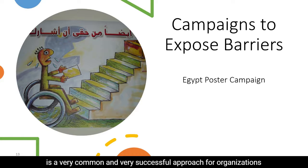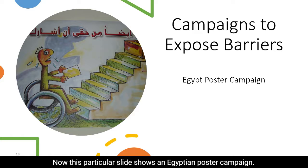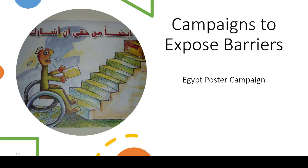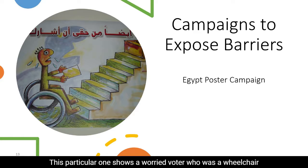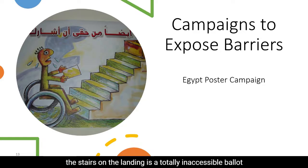Campaigning to expose barriers to political participation is a very common and very successful approach for organizations of persons with disabilities. This slide shows an Egyptian poster campaign — an organization devoted to election access for persons with disabilities had a very famous Egyptian political cartoonist do a series of artistic posters. This particular one shows a worried voter who is a wheelchair user at the bottom of a set of stairs, with a totally inaccessible ballot box at the top.